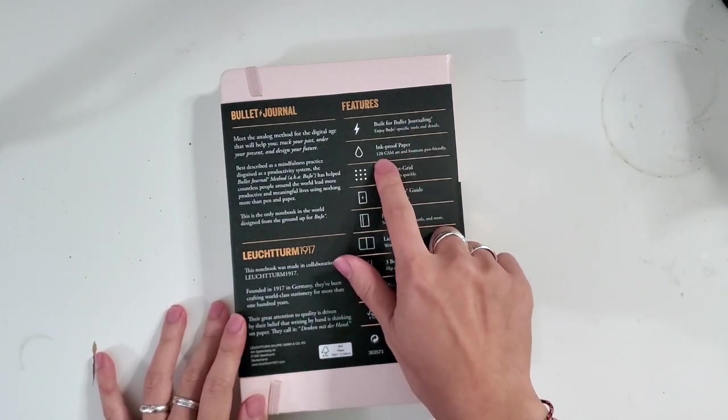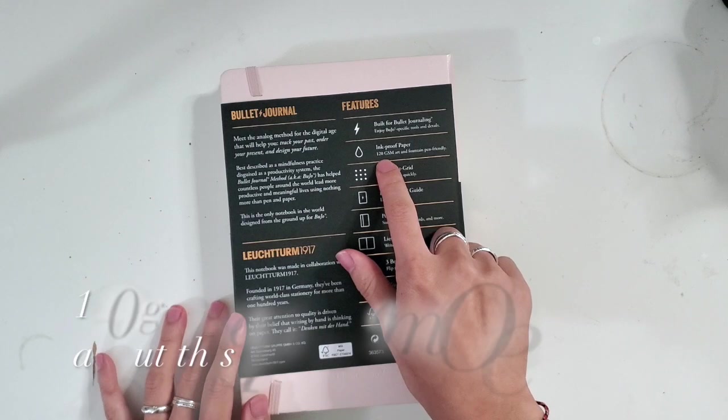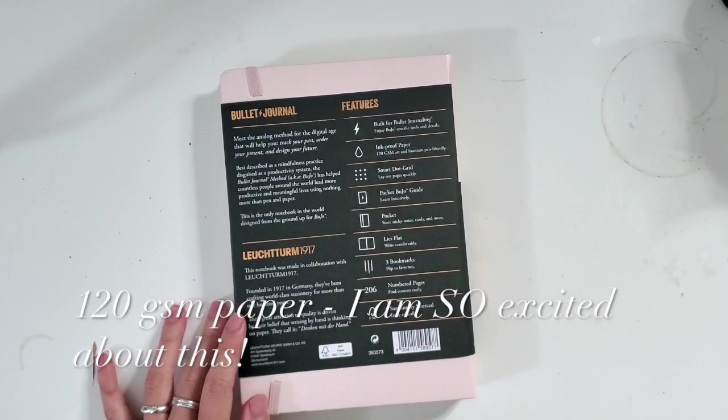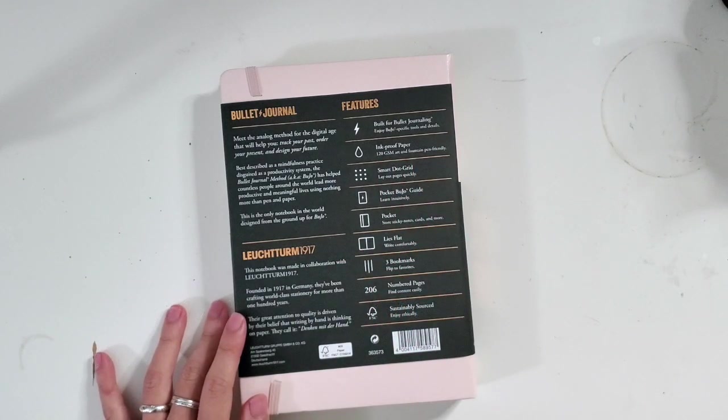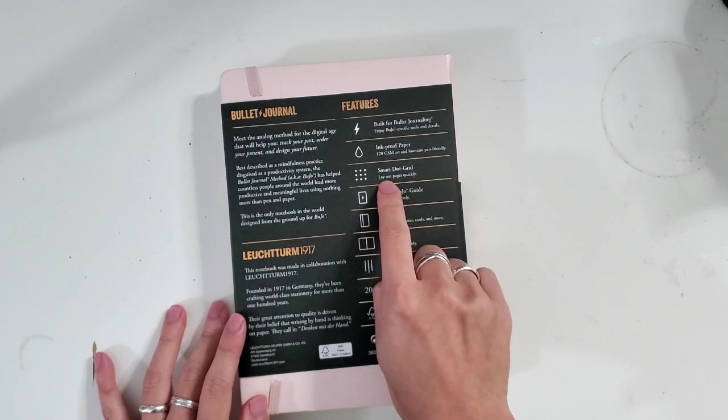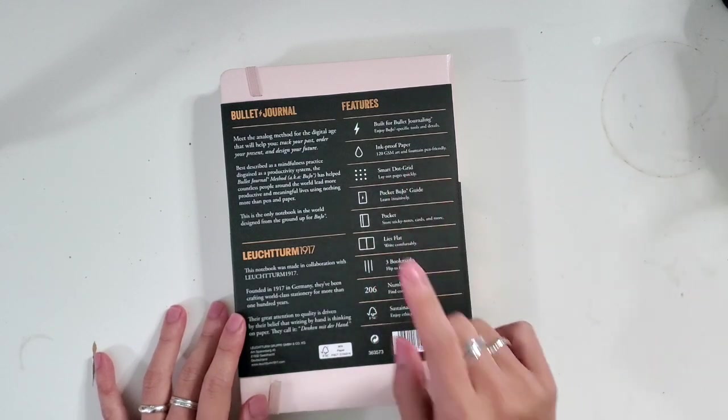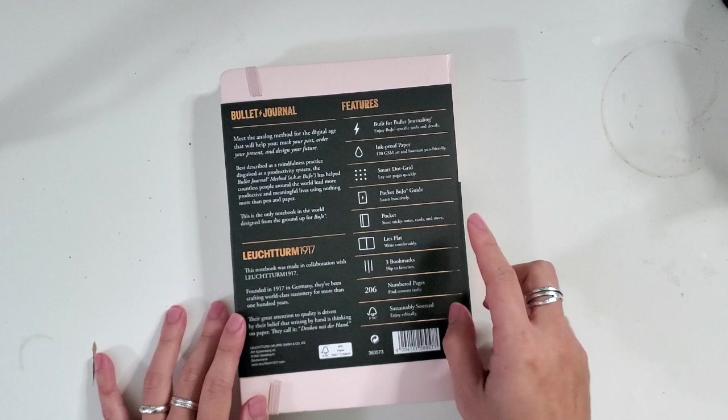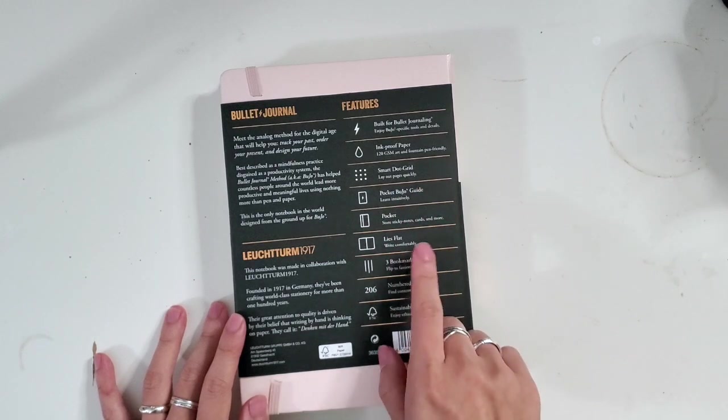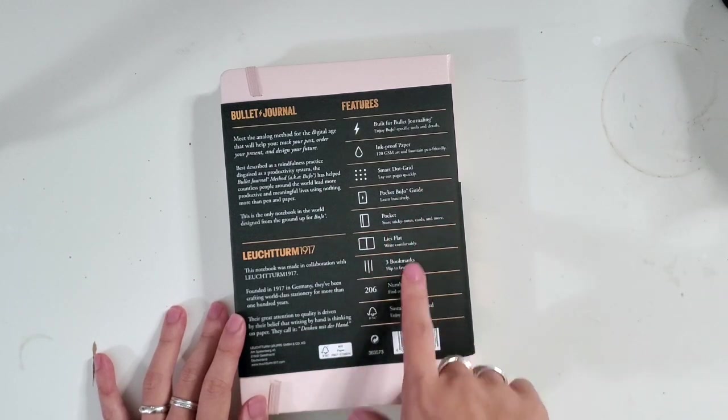The paper has been upgraded to 120 GSM, which is really exciting for people like me because that was one of the reasons why I kind of went away from using it. The smart grid is one of my favorite features. The pocket guide and then of course we still have the lying flat.